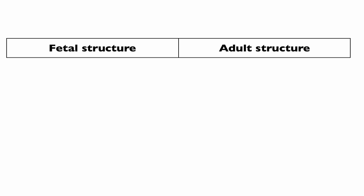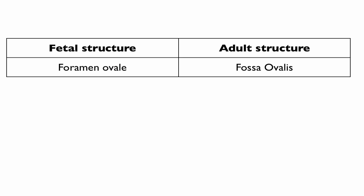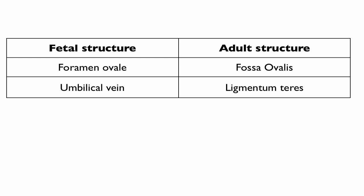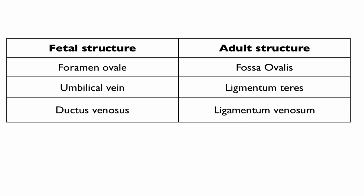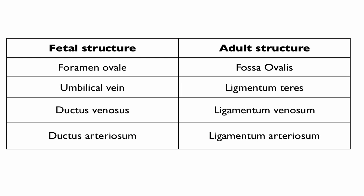Finally, the fetal structures become adult remnants: the foramen ovale becomes the fossa ovalis; the umbilical vein becomes the ligamentum teres, which can be recannulated in portal hypertension causing caput medusae; the ductus venosus becomes the ligamentum venosum; and the ductus arteriosus becomes the ligamentum arteriosum.